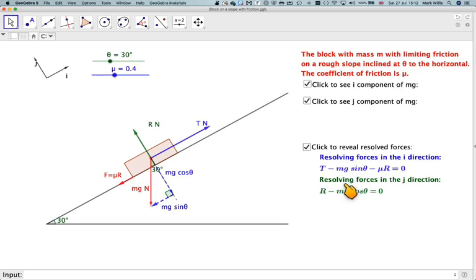Okay, and then if we want to resolve the forces in the j direction, then that's obviously perpendicular to the slope, then we're going to have R minus this component here, mg cos theta.